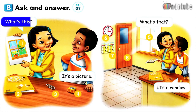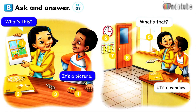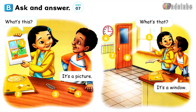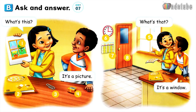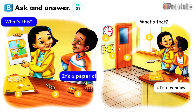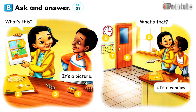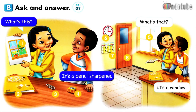Number 1. What's this? It's a picture. Number 2. What's this? It's a workbook. Number 3. What's this? It's a paperclip. Number 4. What's this? It's a pencil sharpener.